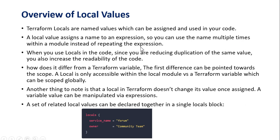Suppose you have an expression or function which you want to use in multiple resource blocks. Instead of copying that expression into all the resource blocks, you can create a local and specify a particular name for that expression. That name you can then use throughout your code. We will see this in the demo and it will be more clear.